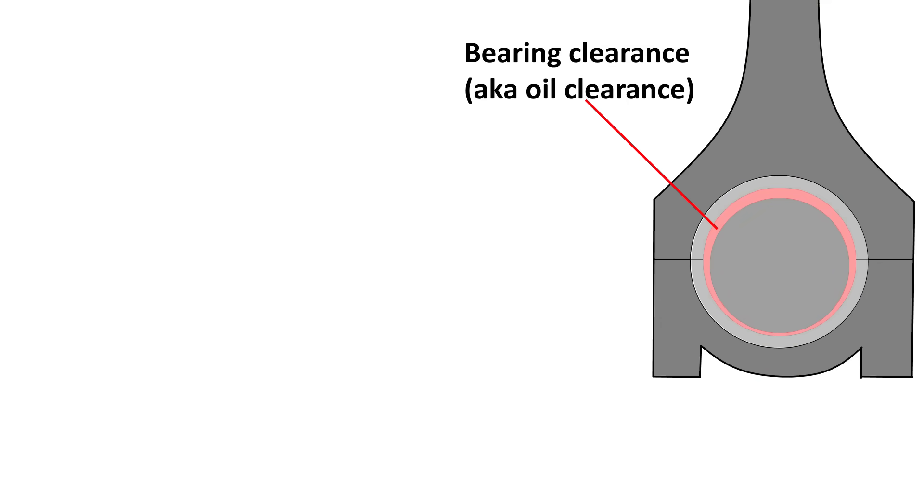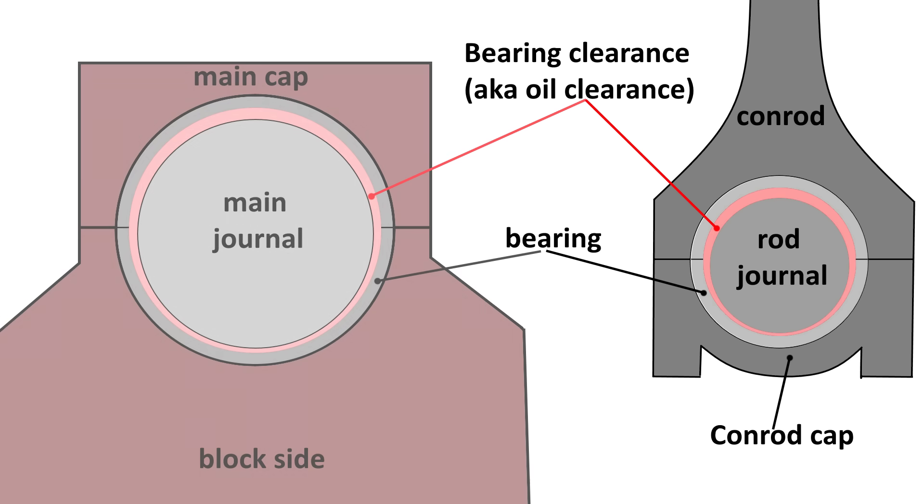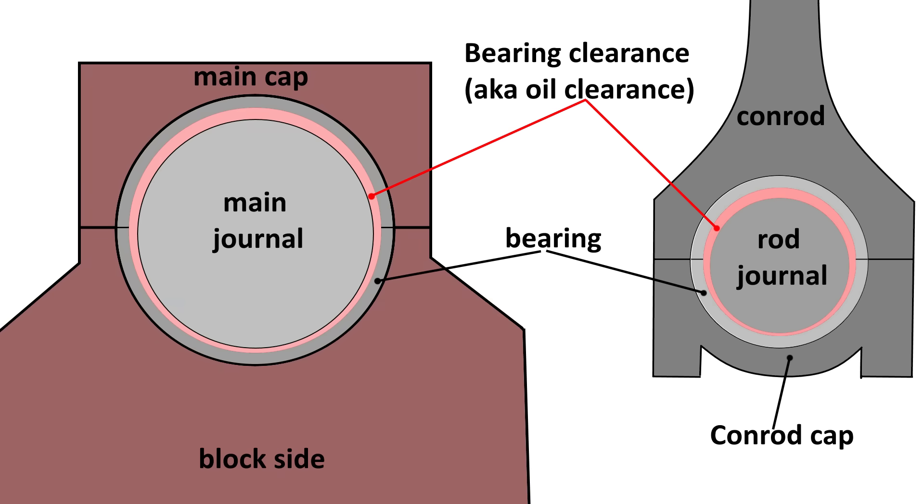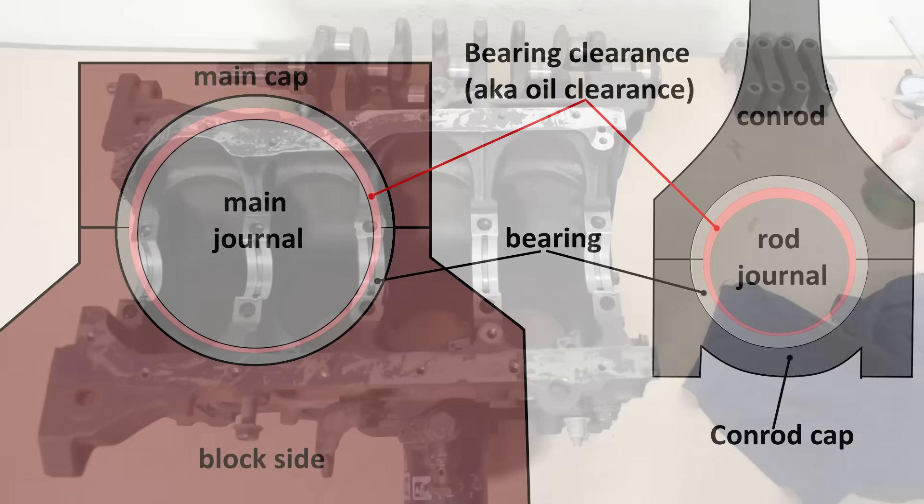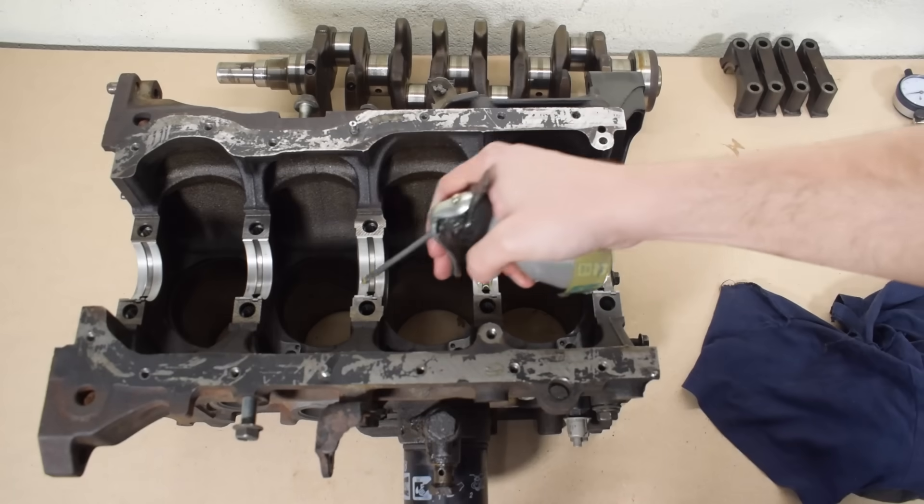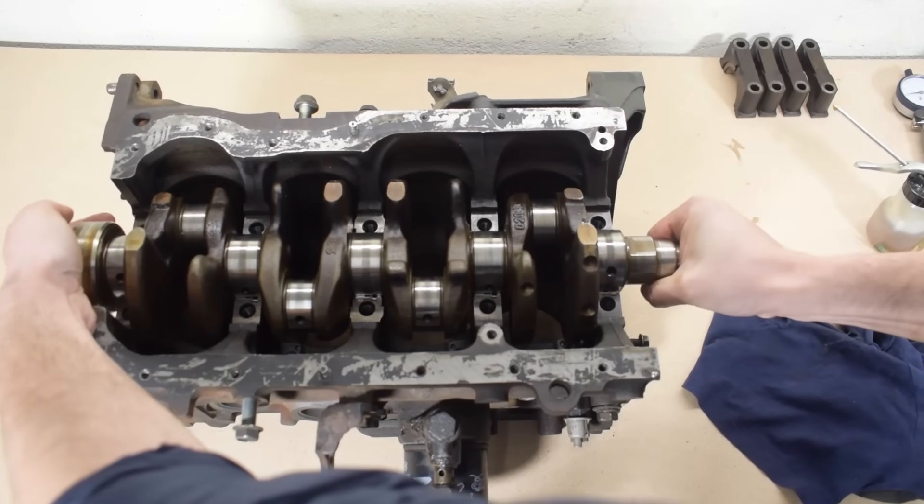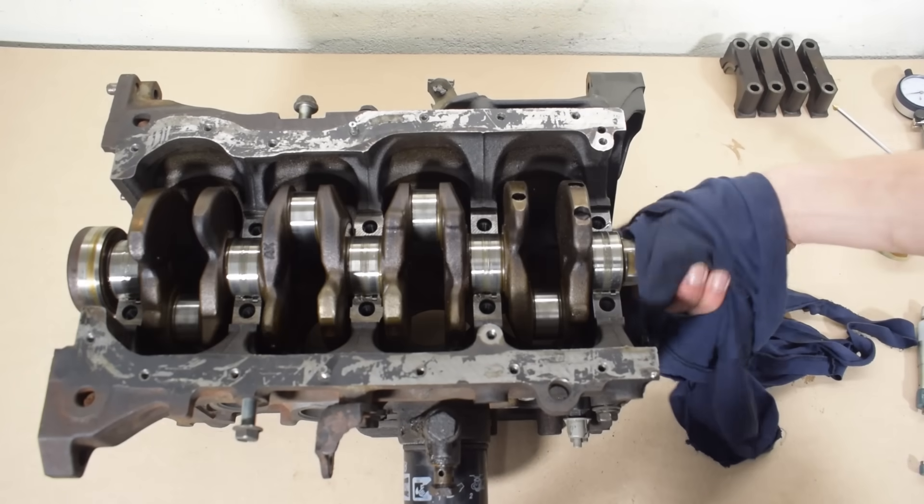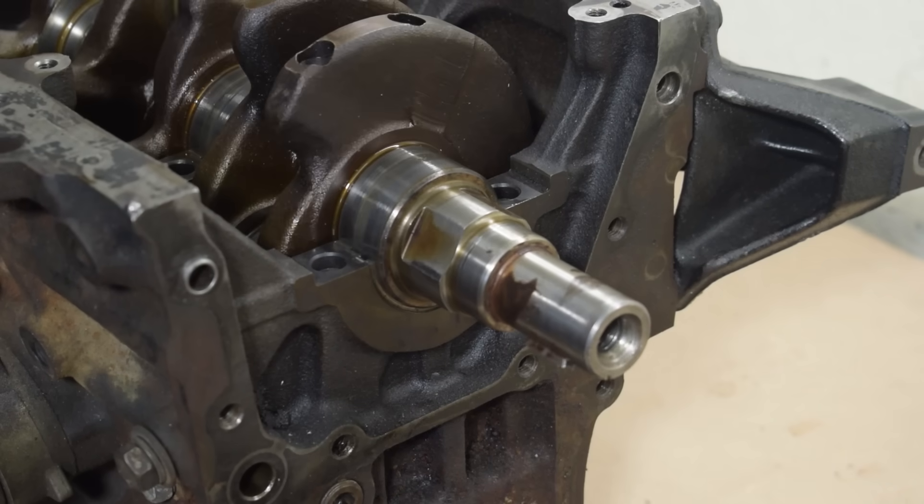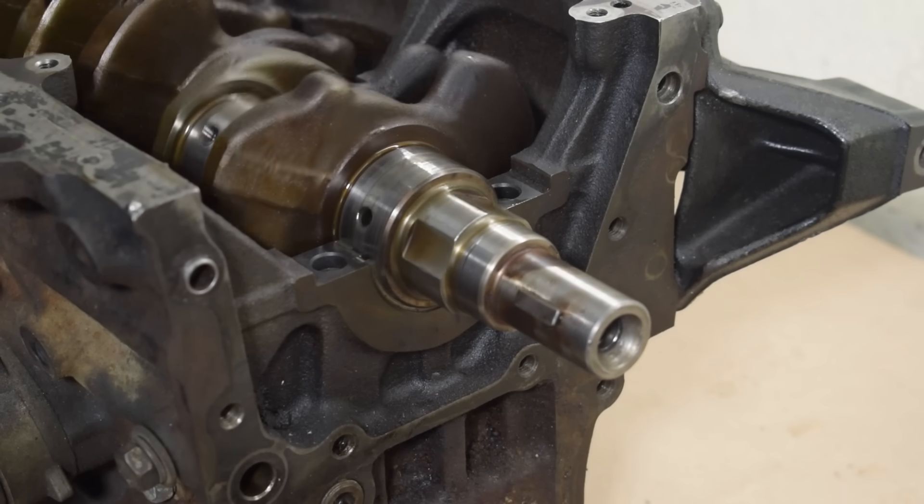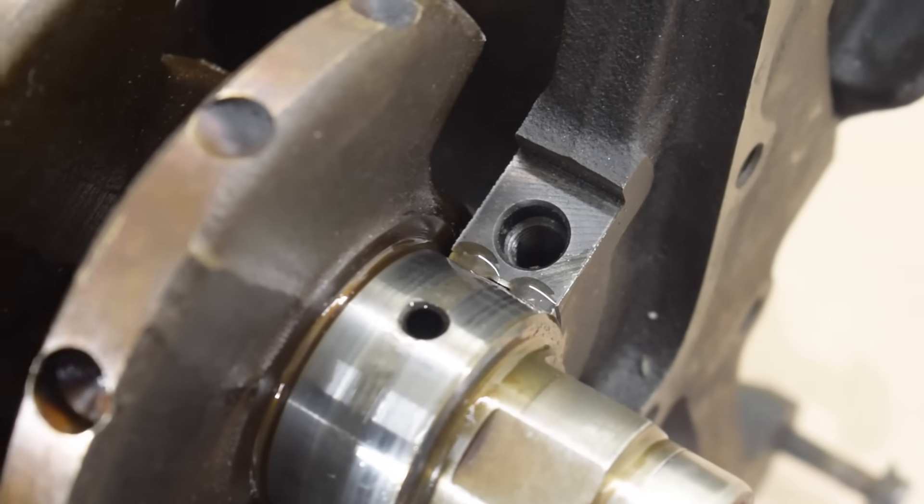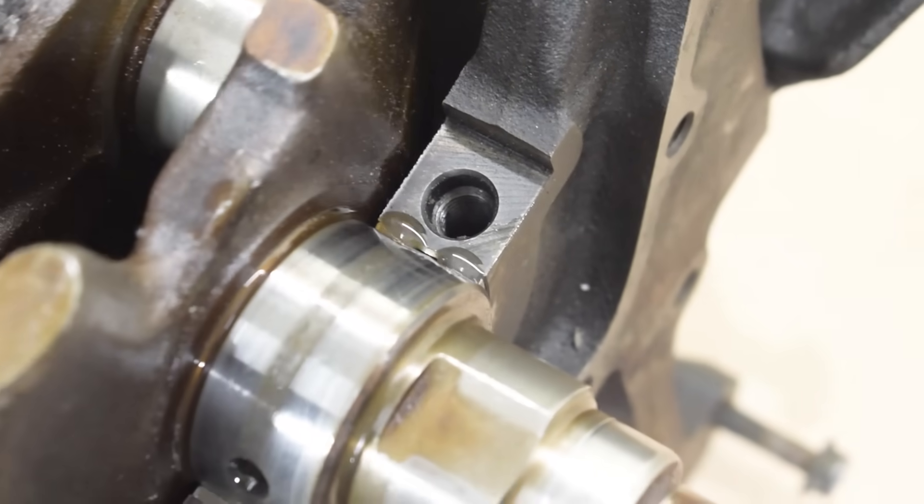When we speak about bearing clearance on an engine, we're usually referring to the clearance between the crankshaft rod journal and the rod bearing, as well as the clearance between the crankshaft main journal and the main bearing. There's a film of oil between your crankshaft journals and your rod and main bearings. The bearing clearance determines the thickness of the oil film and thus plays a key part in your oil pressure and oil temperatures.